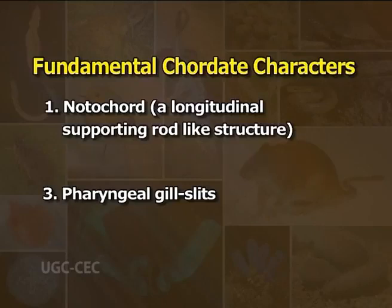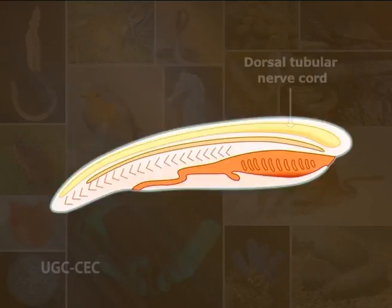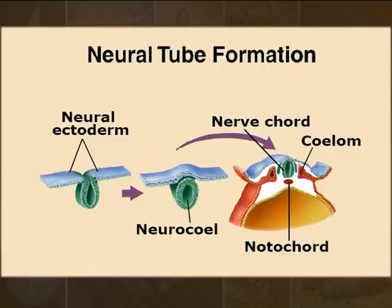Number two: dorsal tubular nerve chord. In chordates, there is a dorsal hollow or tubular fluid-filled nerve chord just above the anterior-posterior axis of the body. The nerve chord is formed by an infolding of the mid-dorsal strip of neural ectoderm and encloses a cavity or canal called the neurocoel. The nerve chord lies above the notochord and outside the coelom, extending lengthwise in the body.